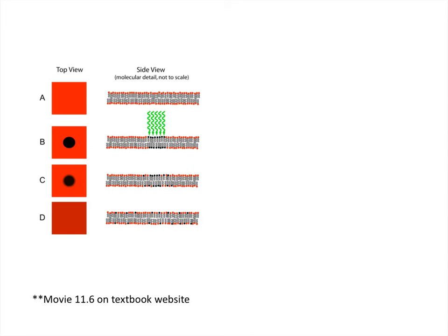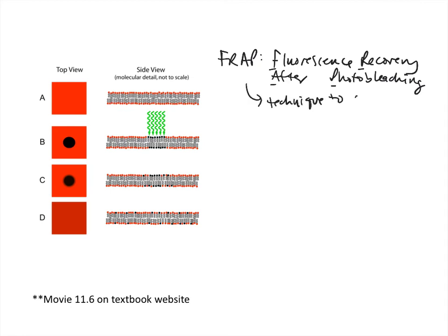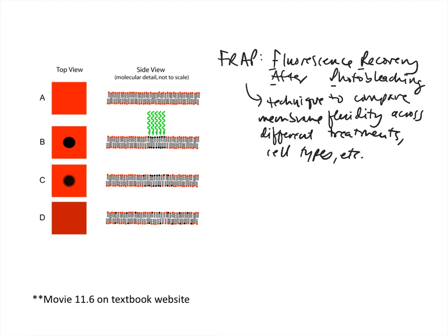So let's talk a little more about that technique. So again it's called FRAP, fluorescence recovery after photobleaching. So basically you can compare membrane fluidity across different treatments or cell types. You could probably compare different proteins as well. So again this is the photobleach event here. This is the recovery, especially at the end here. So kind of in the process of recovering.